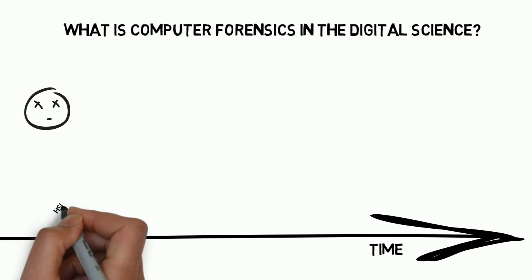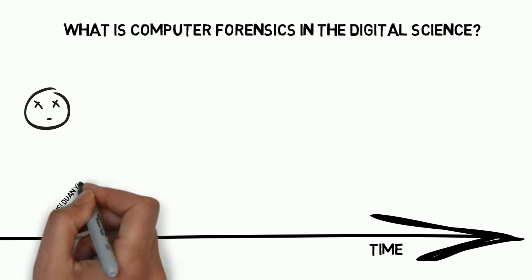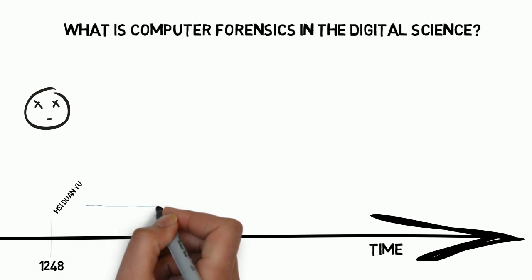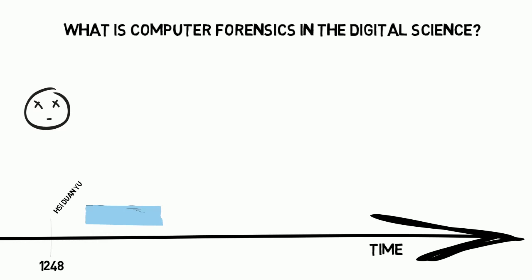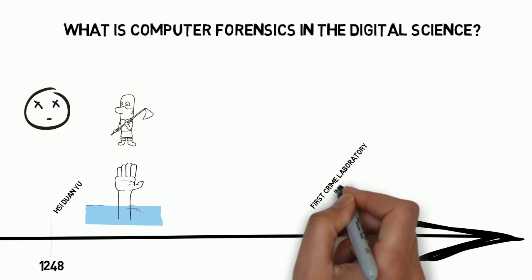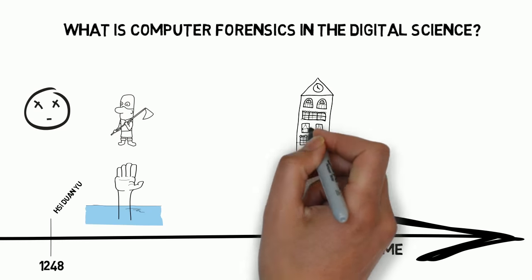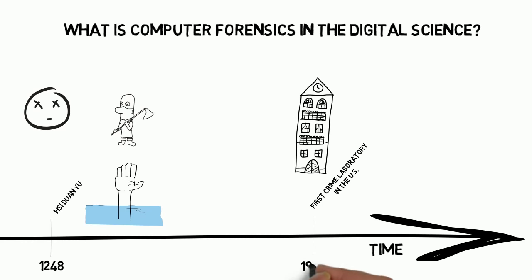The Chinese book Svi Duan Yu, meaning 'the washing away of wrongs,' which appeared in about 1248, described the effects of different ways of dying — for example, death by drowning as opposed to death by execution. Nearly 700 years later, the first crime laboratory was established in the U.S. by the Los Angeles Sheriff's Department in 1930. Although forensic science has been evolving for many centuries, digital forensics is a relatively new development.